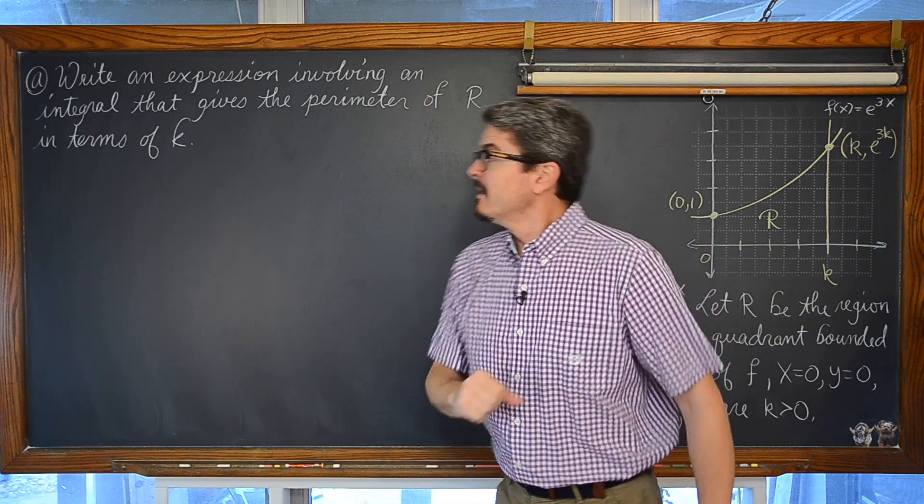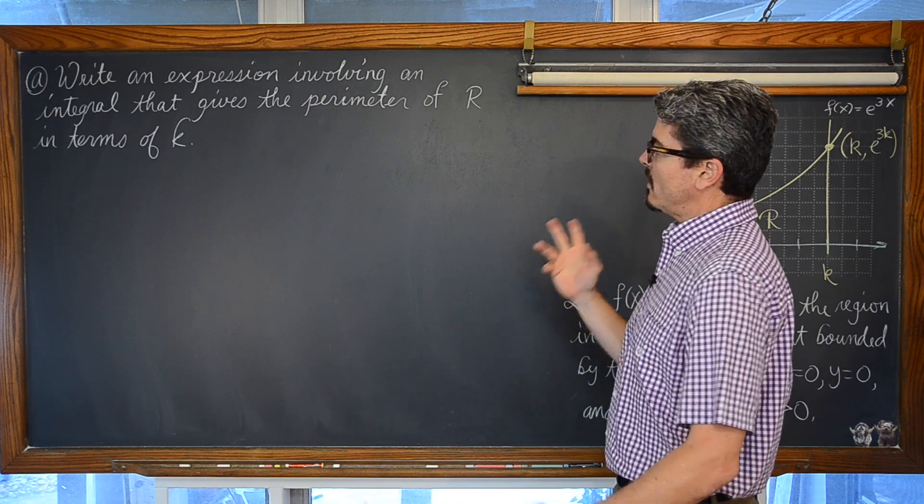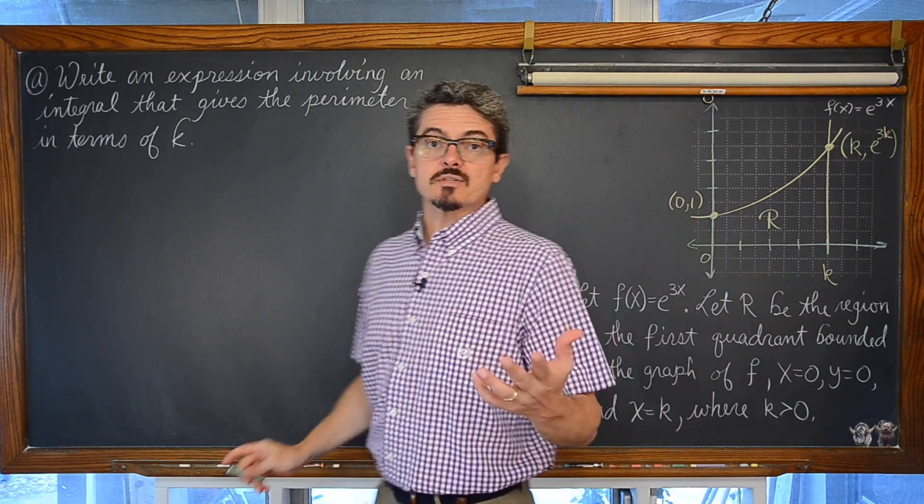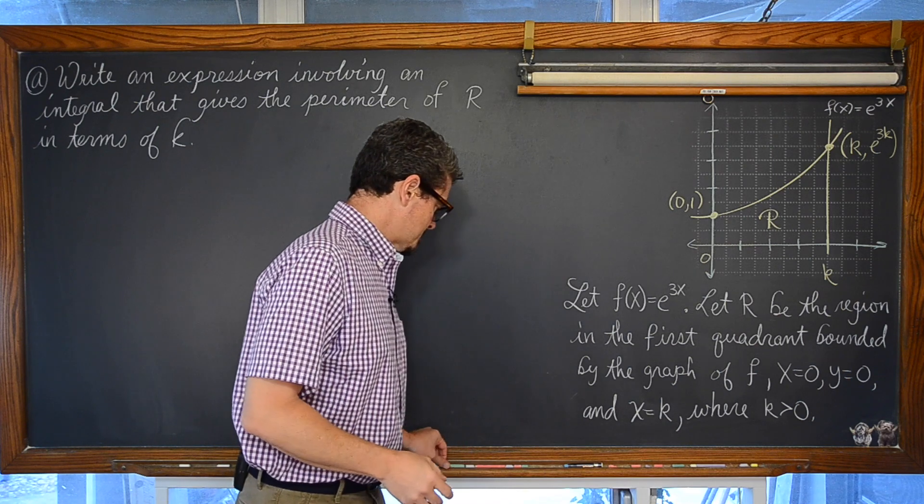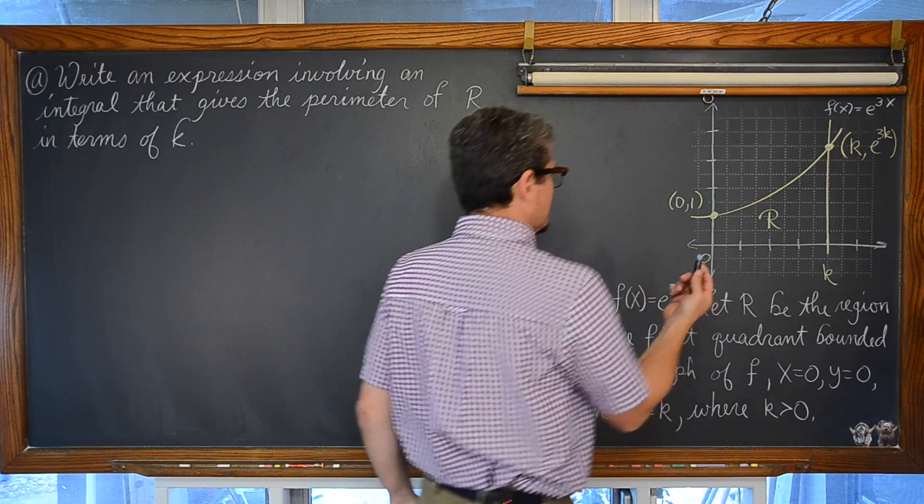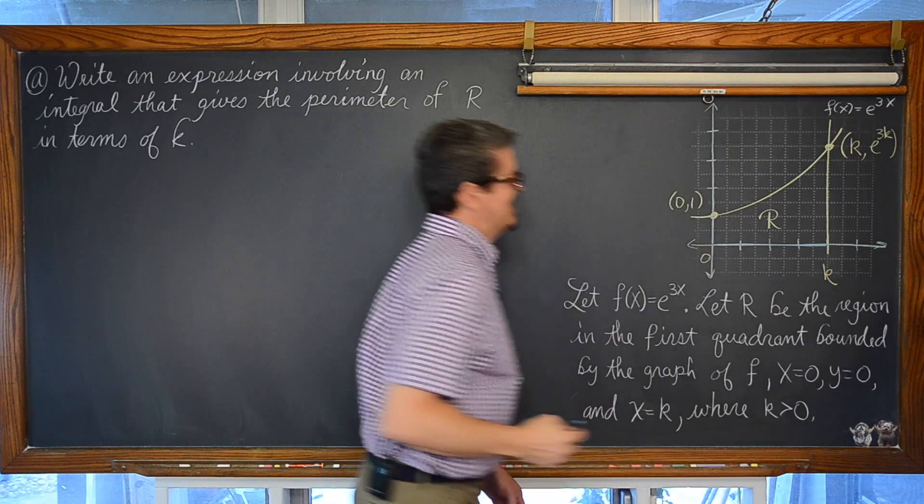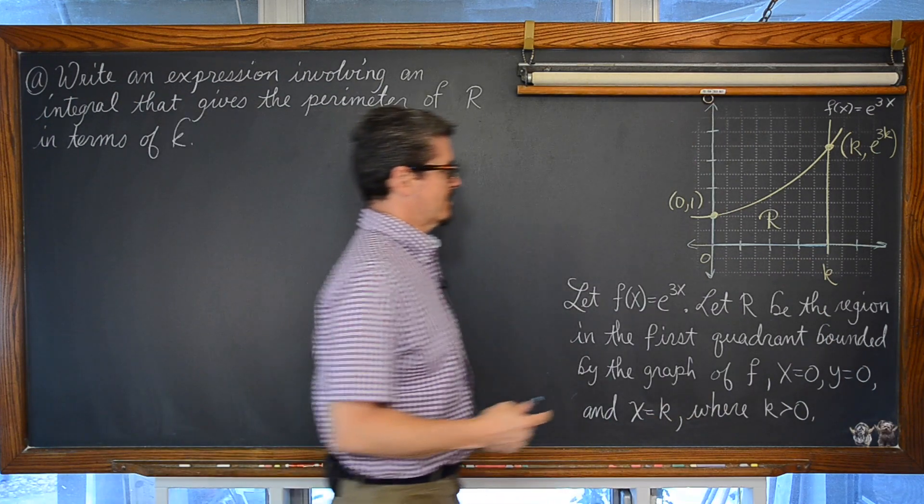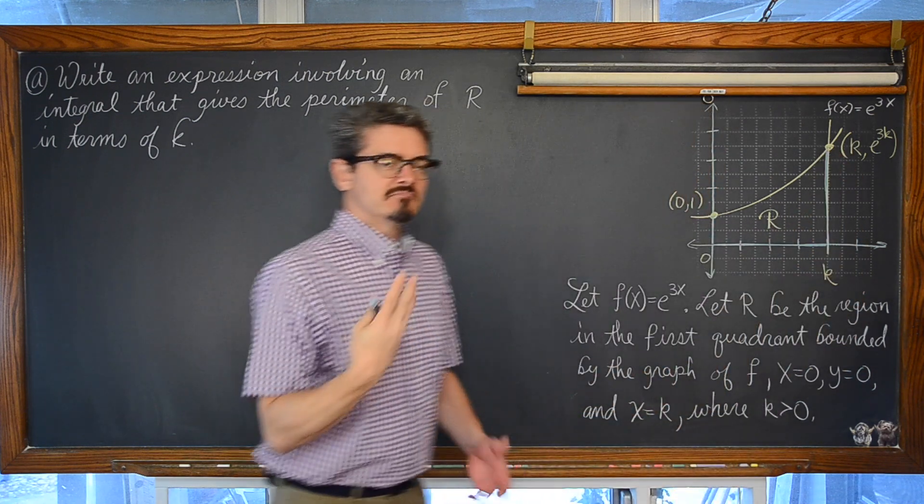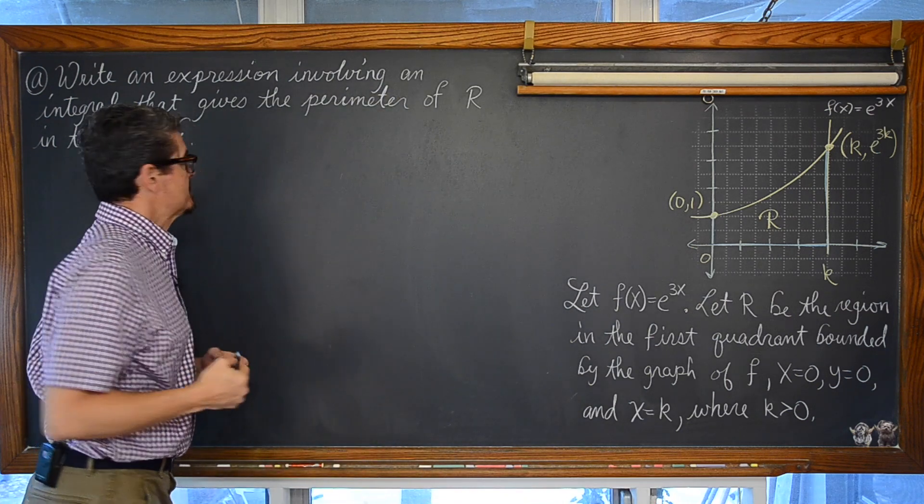Part A. We are going to write an expression involving an integral that gives the perimeter of R in terms of k. Well, perimeter is just the distance around an object. This is a little bit of calc BC or calc 2, depending on how your classes are set up. But we have three parts here. We have a line segment, and another line segment, and basically we have another line segment. This is practically the same as finding the perimeter of a polygon. Just add up the straight sides.